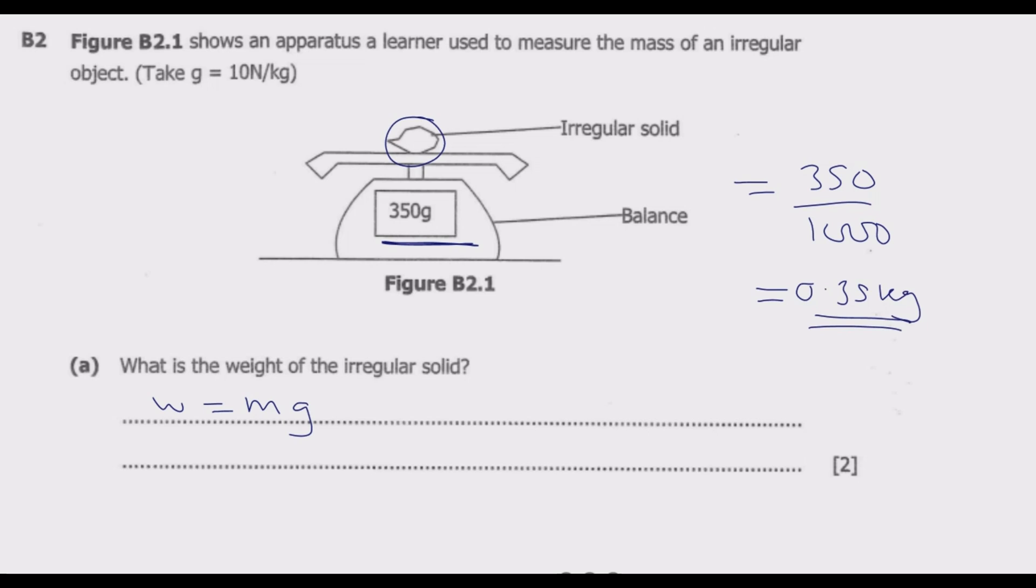This multiplied by gravity will be 0.35 kg multiplied by 10 N per kg. What you notice in this case is the kg units cancel, and you end up with 3.5 N as the weight.